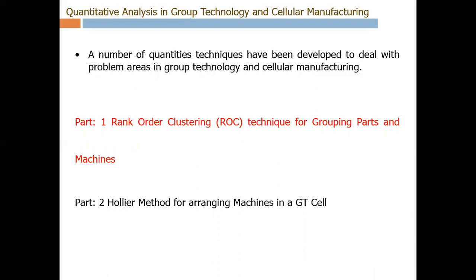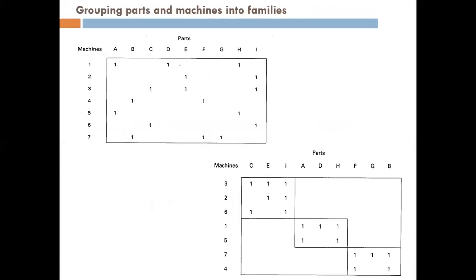We will now start with part 1 — the rank order clustering technique. Here we look at a matrix where the parts are labeled A, B, C, D up to I, and the machines are numbered 1 to 7. These different parts have different interactions with different machines. For example, part A interacts with machine 1, part D interacts with machine 1, and part E interacts with machine 2. Where there is no number, there is no interaction — for instance, part B has no interaction with machine 1. This combination of parts and machine interactions is very difficult to deal with.